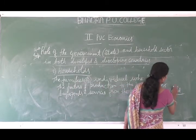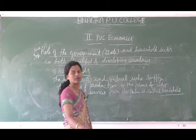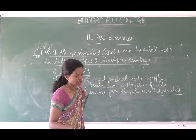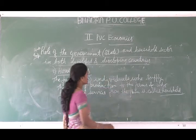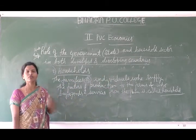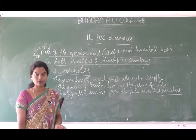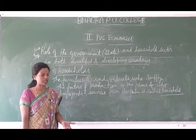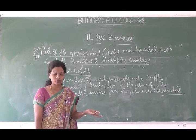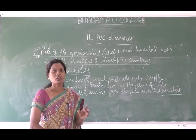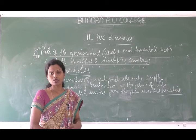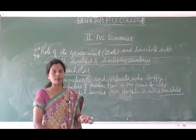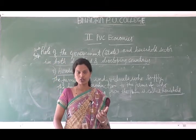Who is a household here? The families or individuals. It includes the family or the individuals who supply the factors of production to the firms. For example, those who supply raw materials — agriculturalists, farmers — who grow cotton and supply it to cotton mills as a raw material. And also those who buy the goods and services.